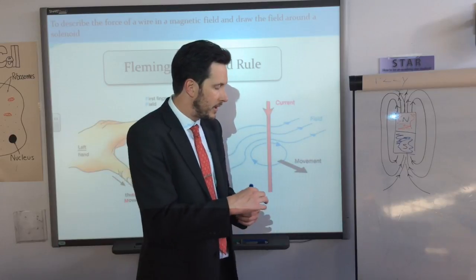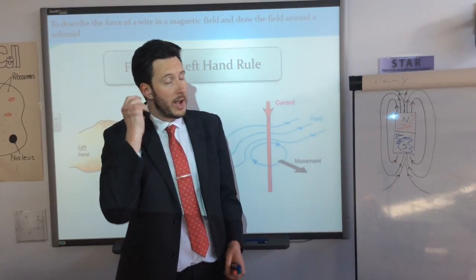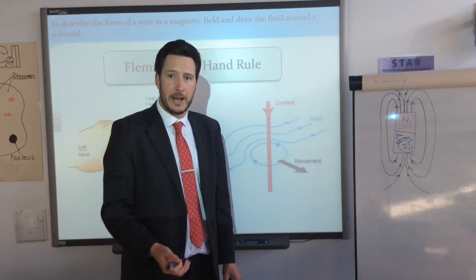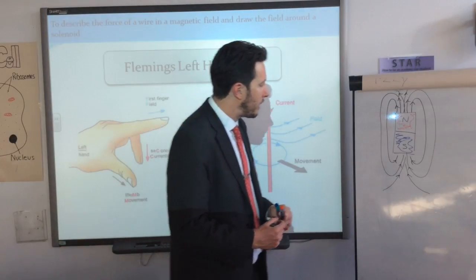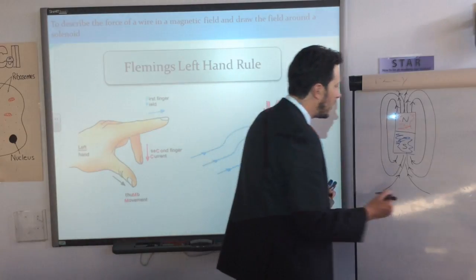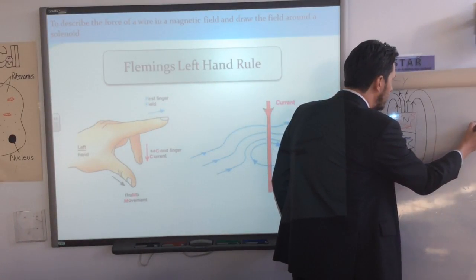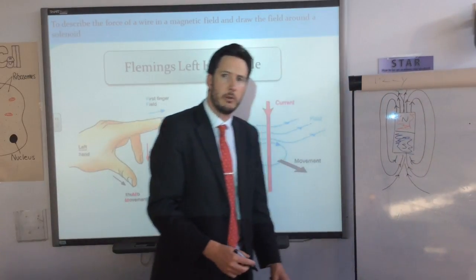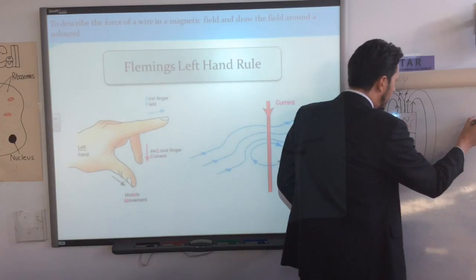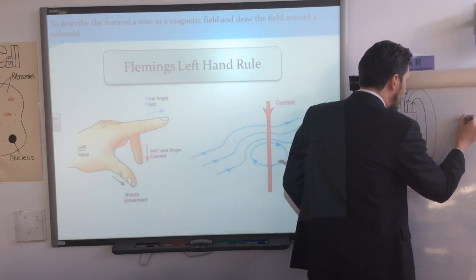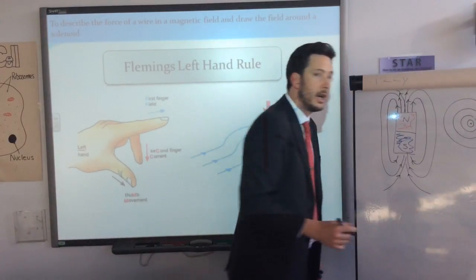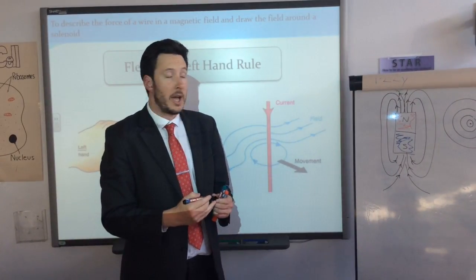Another thing you may be asked to do is plot the magnetic field around a wire. If you've got a wire and you pass an electric current through it, it generates a magnetic field. If the wire is going down into the page — the current flowing inwards — the magnetic field lines are actually in circles around it, like ripples if you threw a stone into a pond.